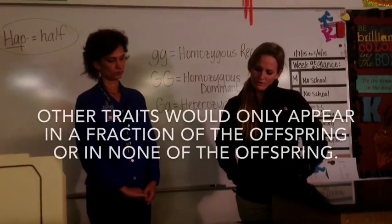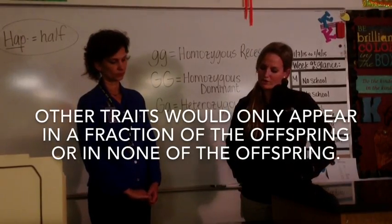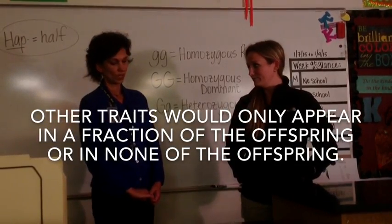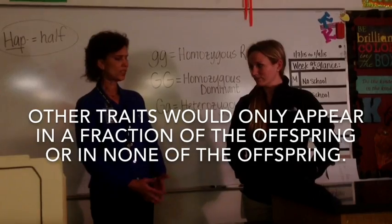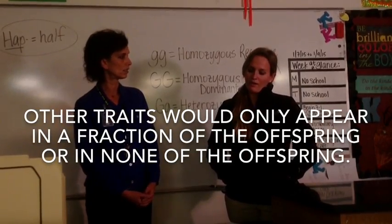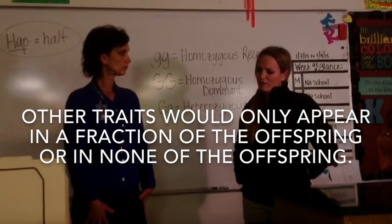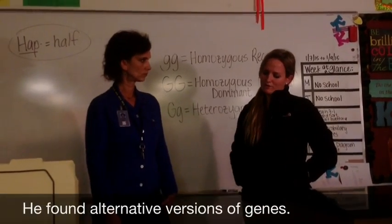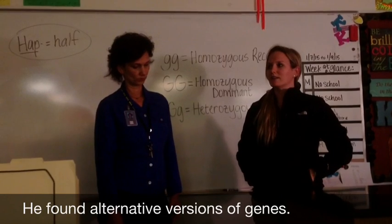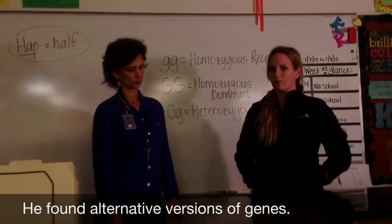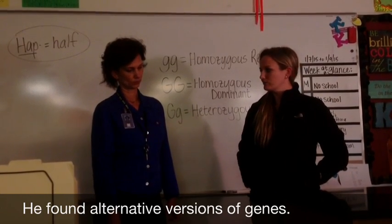Other traits would only appear in a fraction or none of the offspring at all. What did he do with these observations? He found that there were alternative versions of the genes, like some pea flowers were white while others were purple or pink.